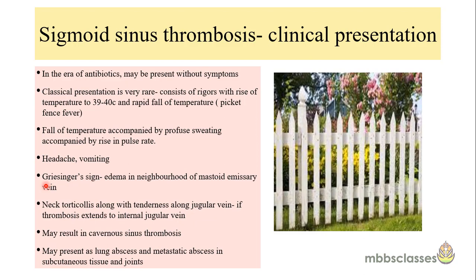One sign sometimes seen is Griesinger's sign, where we get edema in the neighborhood of the mastoid emissary veins extending up to the occipital region, because the sigmoid sinus is connected with the mastoid emissary veins. If the thrombosis extends to the internal jugular vein, the patient may have associated neck torticollis and tenderness along the anterior neck. Rarely it may present as cavernous sinus thrombosis signs, or very rarely as lung abscess or metastatic abscess in subcutaneous tissues and joints due to septic emboli.